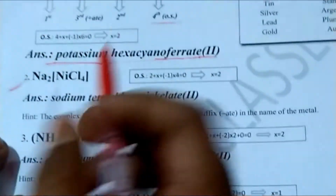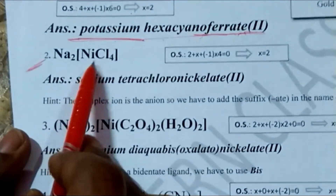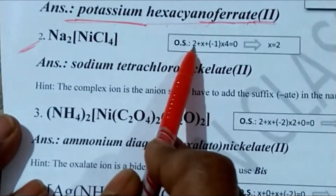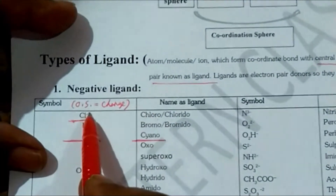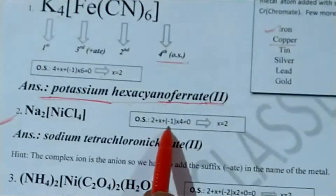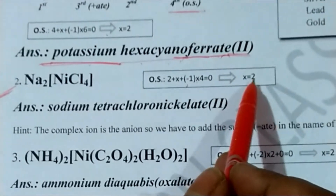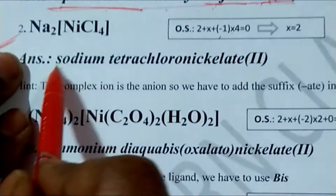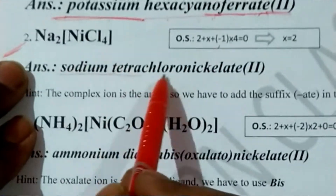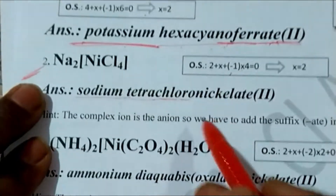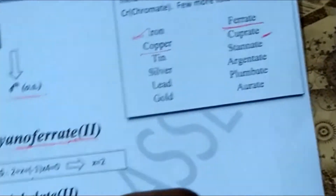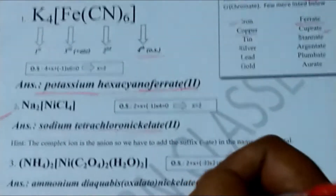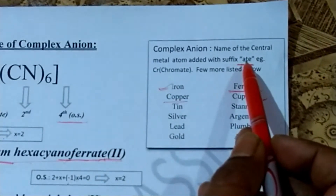For Na₂[NiCl₄]: oxidation state — sodium gives +2, nickel is x, chlorine is −1 per atom, and there are 4 chlorines: 2 + x + (−1)(4) = 0, so x = 2. The name is: sodium tetrachloronickelate(II) — we write sodium first, then tetrachloro, then nickelate (adding '-ate' because it is a complex anion), then the oxidation state 2.